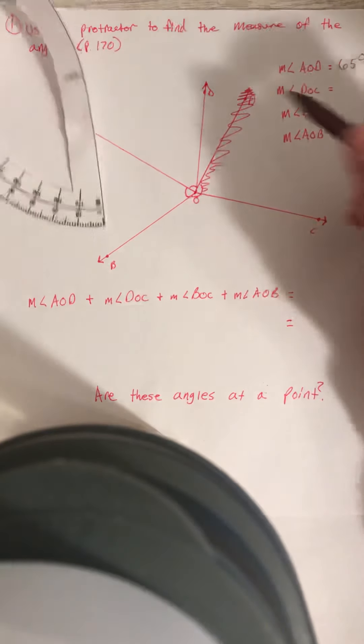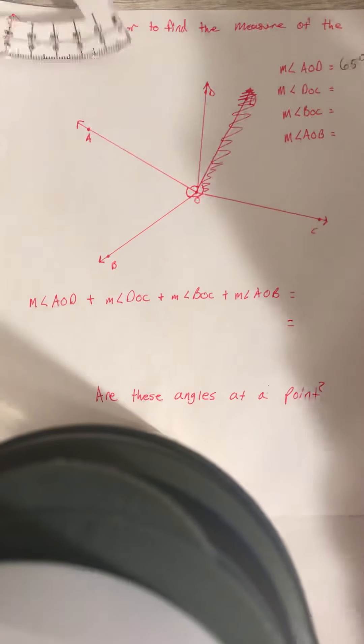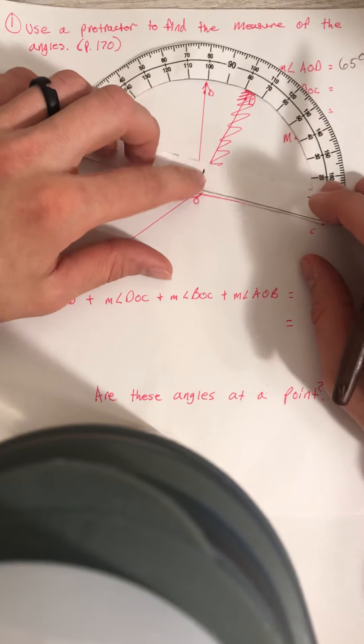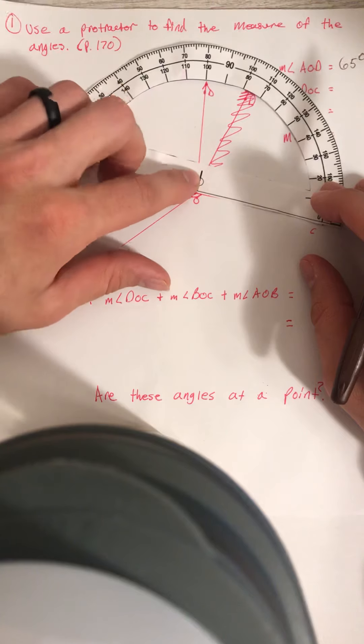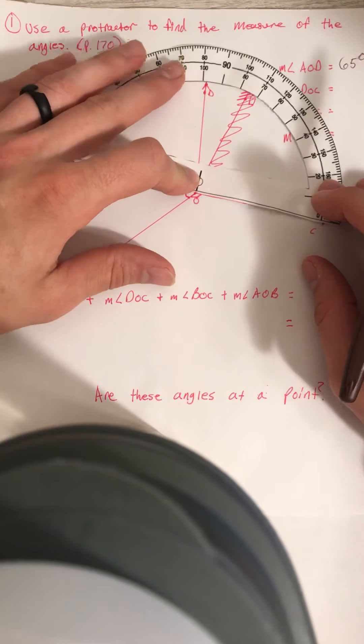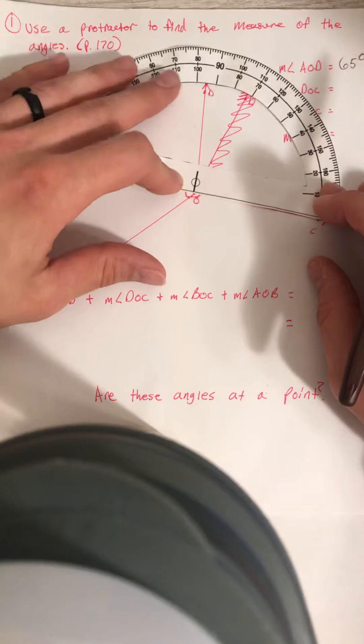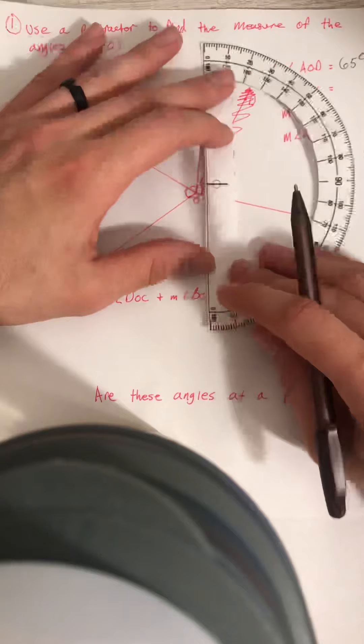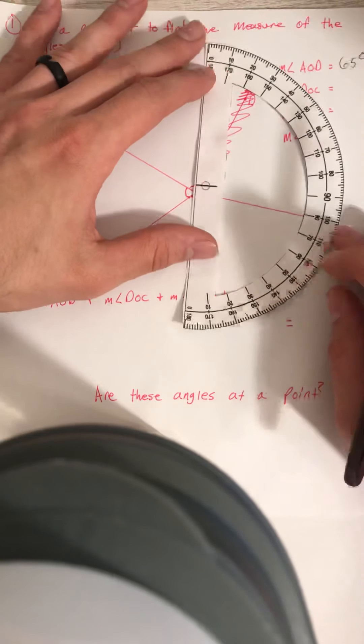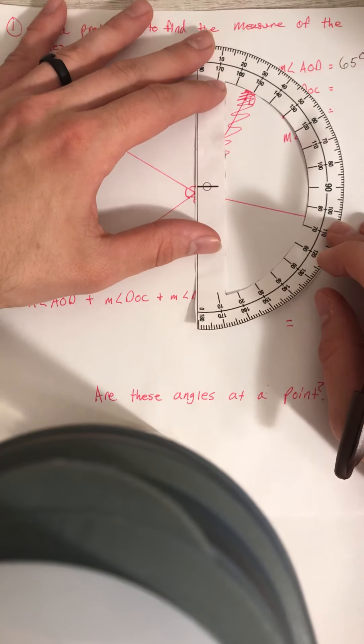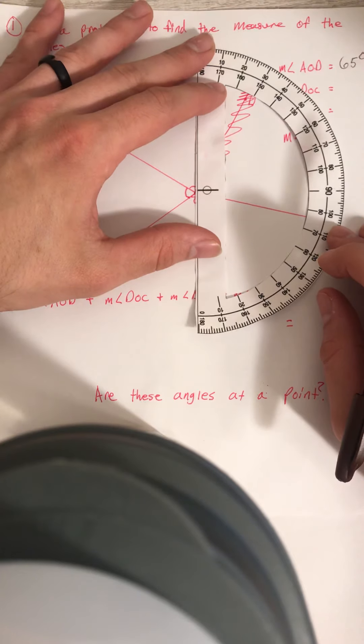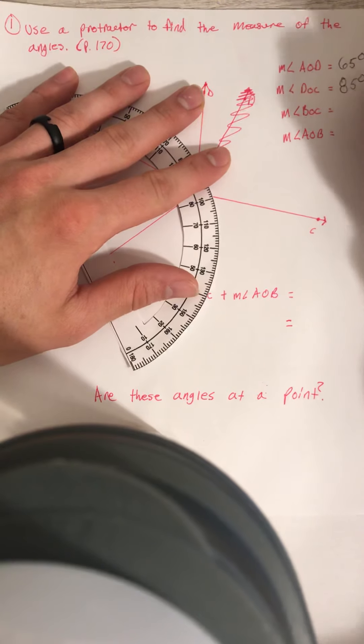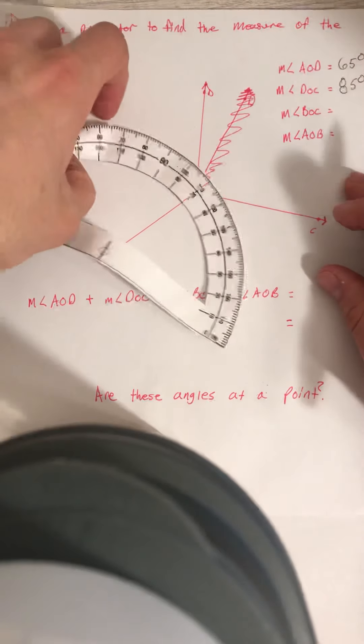Now let's check DOC, angle DOC. So when I'm checking angle DOC, I do the same thing. I put the midpoint of my protractor onto one of my rays to check the measure. Make sure this is on point. Here we go. And I am at 85 degrees there. I can check it here just to be sure. I'm at 85 degrees there. So the measure of my angle DOC is 85 degrees.